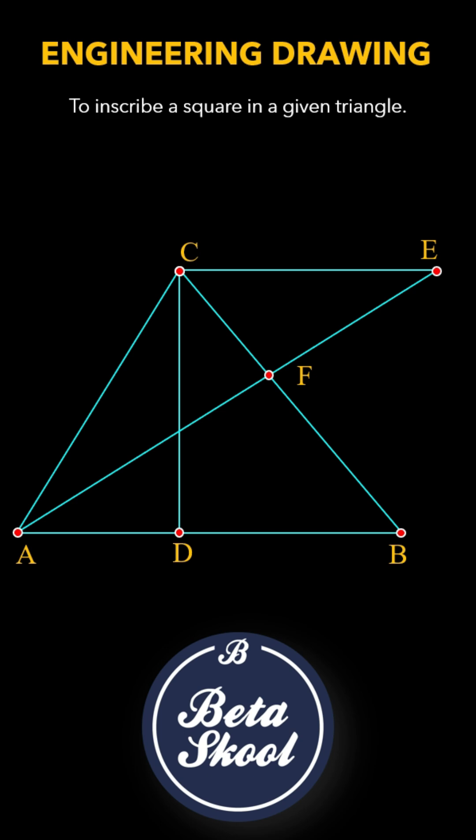From point F, draw line FG parallel to AB. From point G, draw line GH parallel to CD.